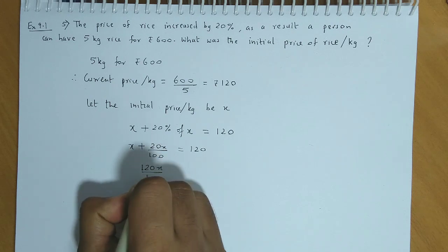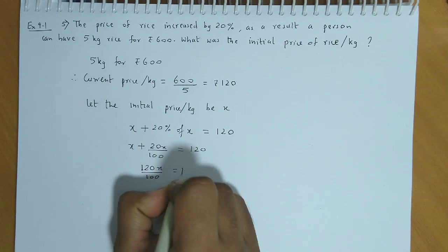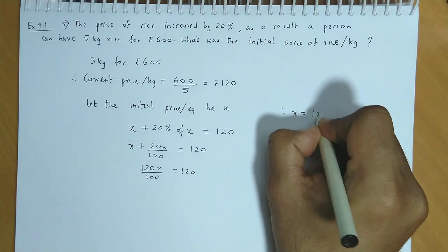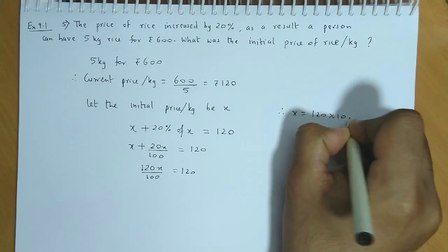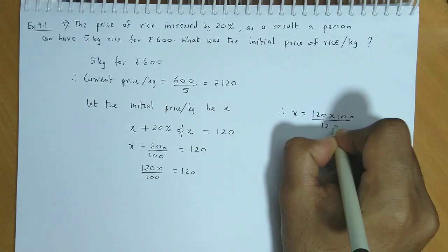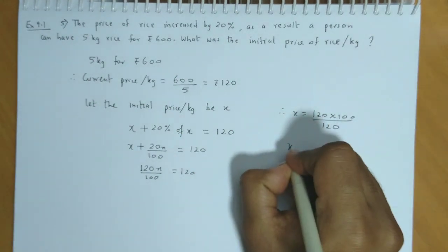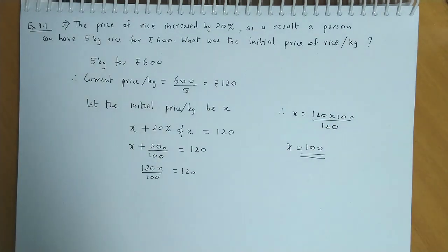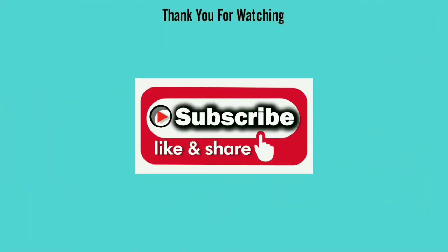Therefore, x ki value hai 120 into 100 divided by 120. So finally x ki value aati hai 100 rupees per kg.